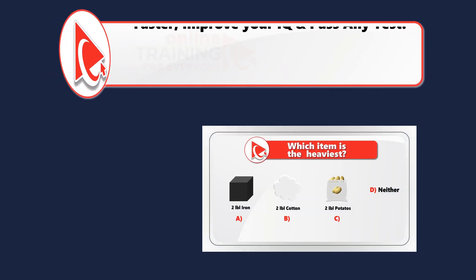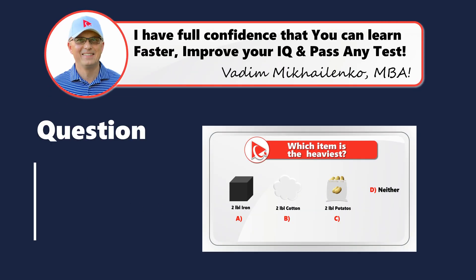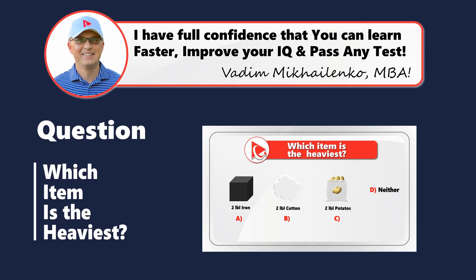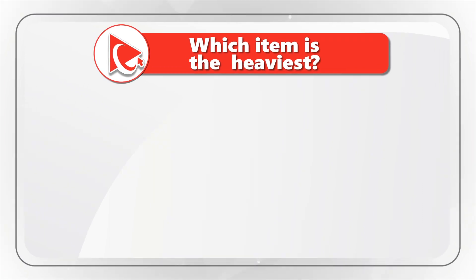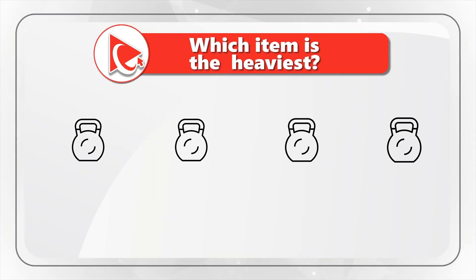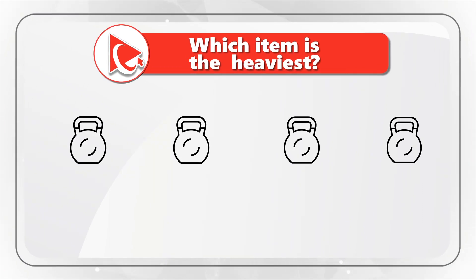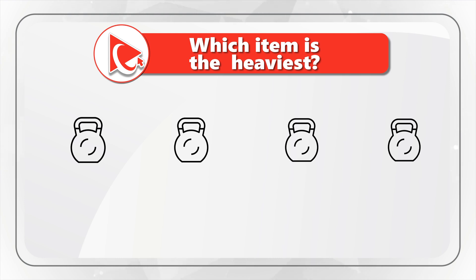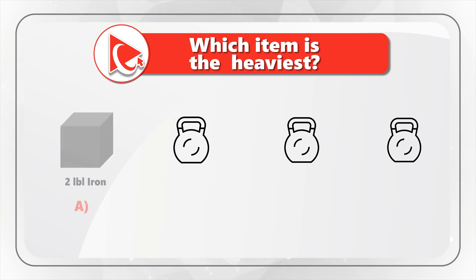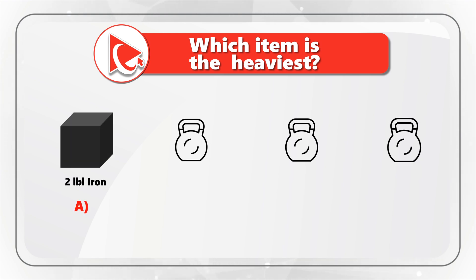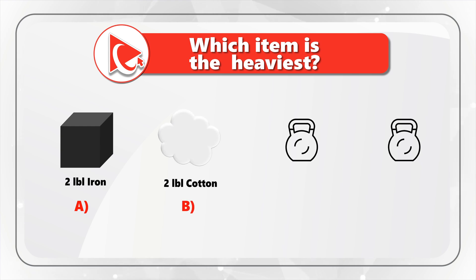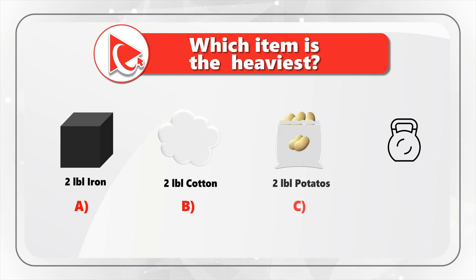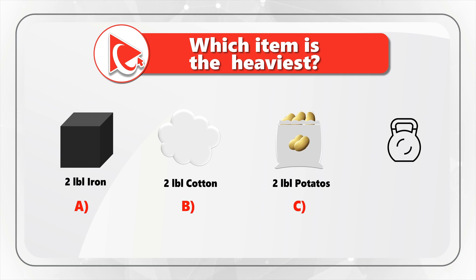Here is an absolutely brilliant and at the same time very tricky question, but I have full confidence that you will be able to solve it. You need to determine which item is the heaviest. You are presented with four possible choices: Choice A — 2 lb of iron, Choice B — 2 lb of cotton, Choice C — 2 lb of potatoes, and Choice D — neither one.